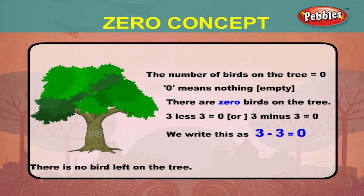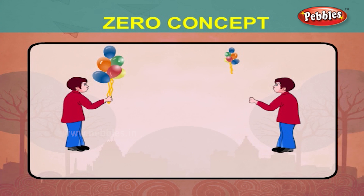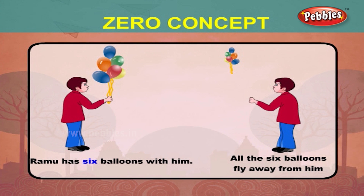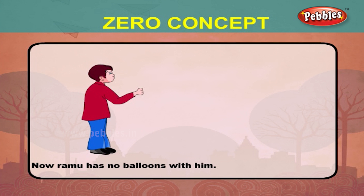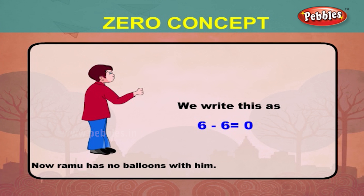Let us see one more example. Ramu has six balloons with him. All the six balloons fly away from him. Now Ramu has no balloons with him. We write this as six minus six is equal to zero.